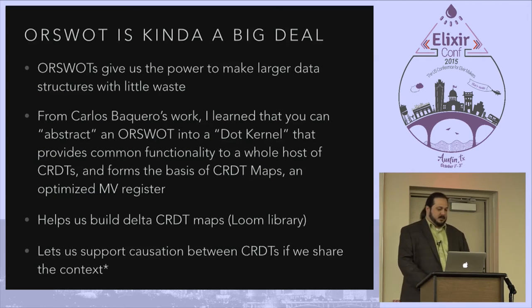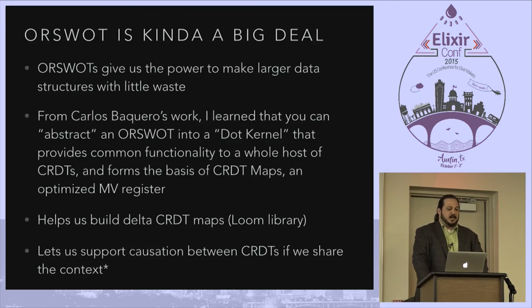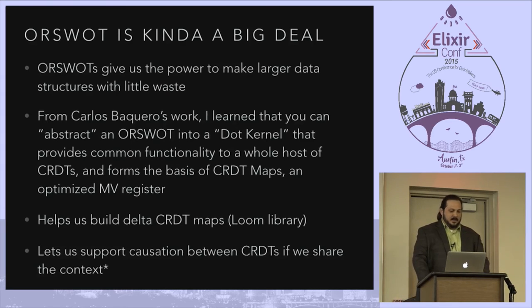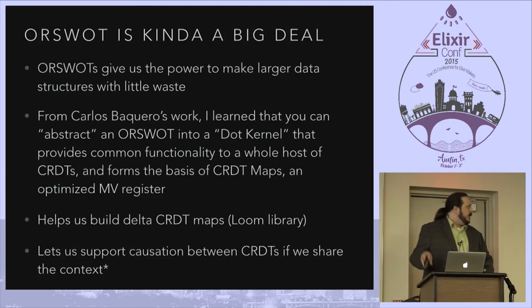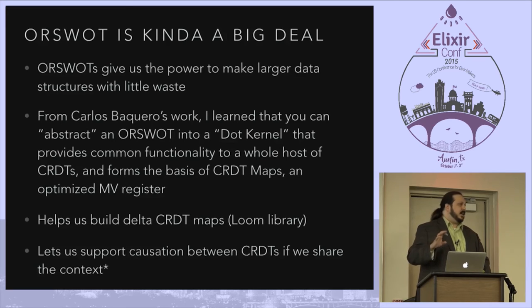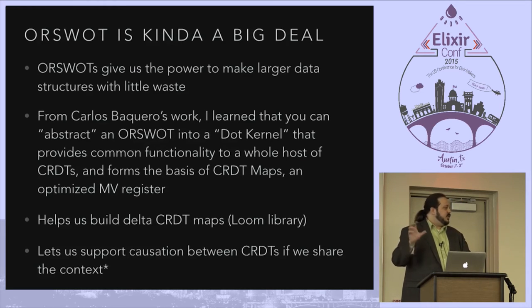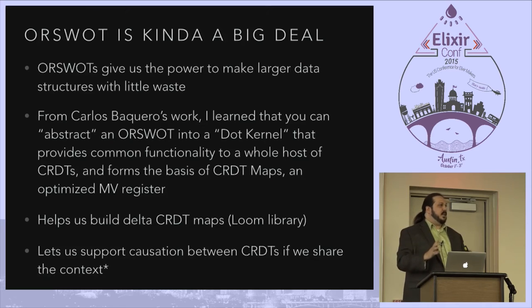ORSWATs are kind of a big deal. I've abstracted them in a library into something called a dot kernel, taking that work from Carlos Baquero, who has a very amazing C++ implementation of CRDTs — though it's hard to read because of all the single-letter variables. There's also a feature called delta CRDTs where you apply operations to a delta structure. Instead of a dot context or dot clock, you have a dot cloud — the atomic pieces that the delta represents. You can ship just that delta, and if everything is contiguous you ship just a subset of your state changes, which solves one of the biggest drawbacks of state-based CRDTs.